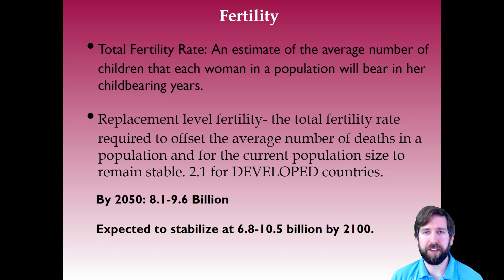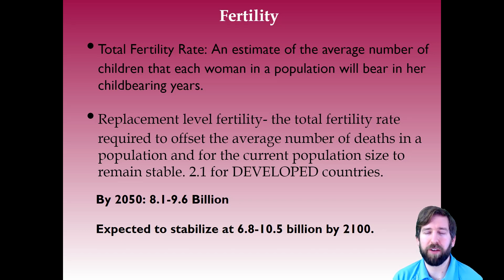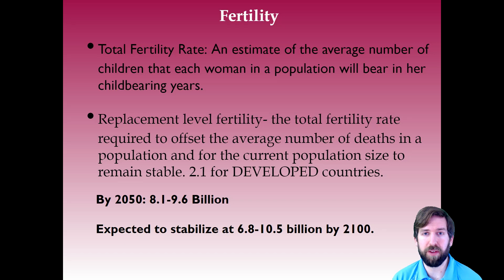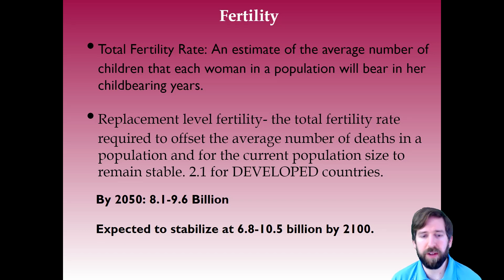Fertility rate is an estimate of the average number of children that each woman in a population will bear during her childbearing years. This is important because if a group is having seven children per mother, you will experience a very high growth rate if the death rate is low. Replacement level fertility tells you what the fertility rate needs to be to keep a population stable without growth. It is approximately 2.1 children for developed countries — some people have three, but it averages out to about 2.1 to keep the country completely stable, resulting in a zero growth rate.